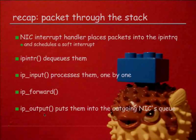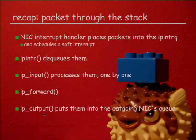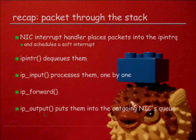Quick recap on how a packet goes through the network stack. The network interface card interrupts. The interrupt handler takes the packets off the RX ring and places them into the IP inter queue — assuming IPv4, of course. After doing this, it schedules the soft interrupt. Eventually, we process the soft interrupts and IP inter dequeues the packets from the IP inter queue, then hands them over to IP input, which processes them one by one.